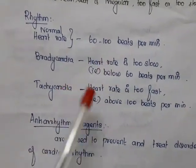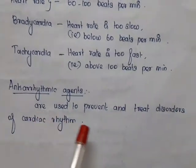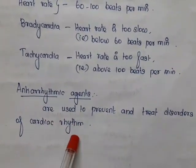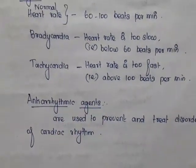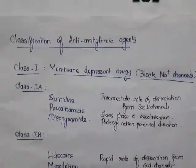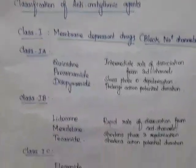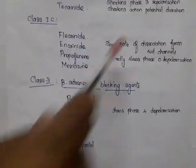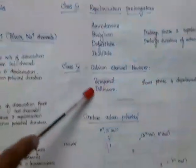Anti-arrhythmic agents are used to prevent and treat disorders of cardiac rhythm. The classification of anti-arrhythmic agents is divided into four types: first, membrane depressant drugs; second, beta adrenergic blocking agents; third, repolarization prolongators; and fourth, calcium channel blockers.